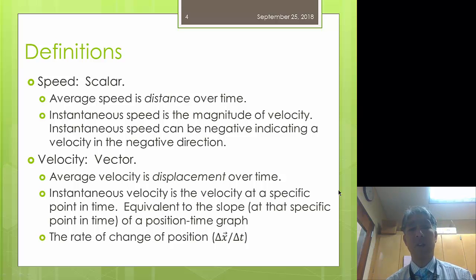Average velocity, just like average speed, is the vector form and in this case it corresponds to displacement over time. The instantaneous velocity, however, is going to be the velocity at a specific point in time.